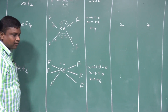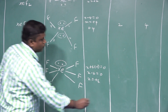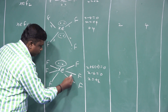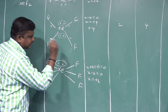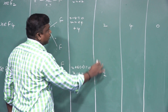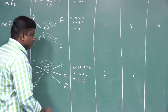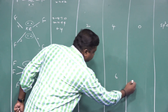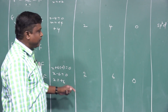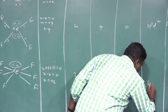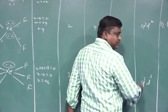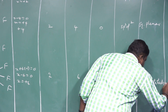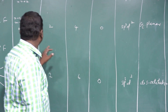For XeF6: number of lone pairs of electrons = 1. Number of sigma bonds = 6. Number of pi bonds = 0 (no double bond). Hybridization = sp3d3. Shape = distorted octahedral.